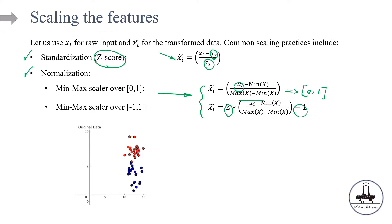Let's look at an example. Imagine our original data has two features: x1 ranging from 10 to 15, and x2 ranging from 0 to 10. In real-world scenarios, the magnitudes can be very different — for example, one variable in percentage and another in millions of dollars.